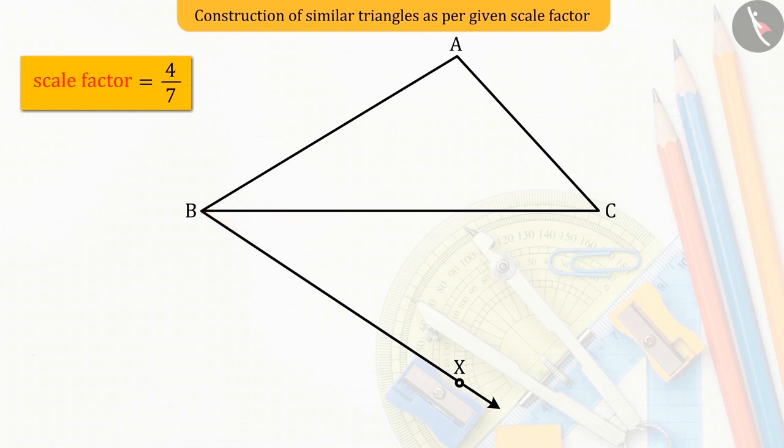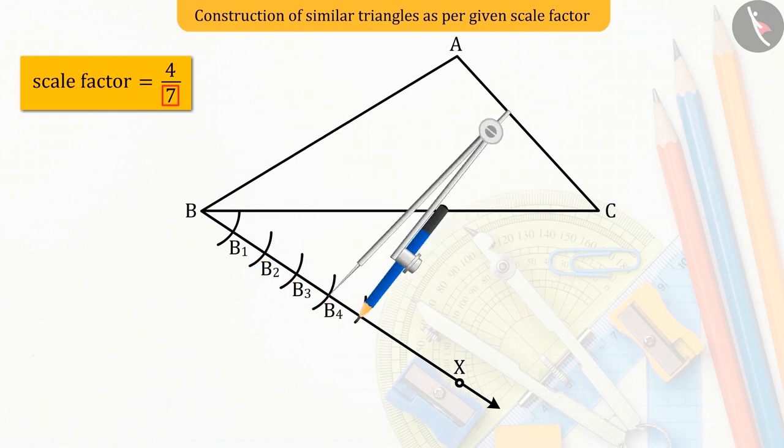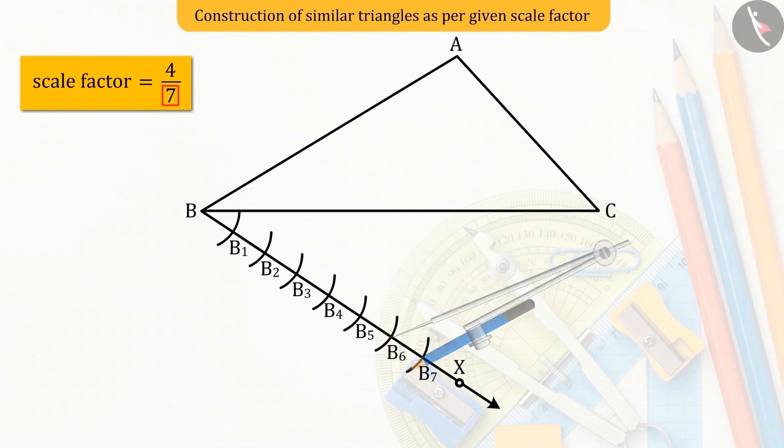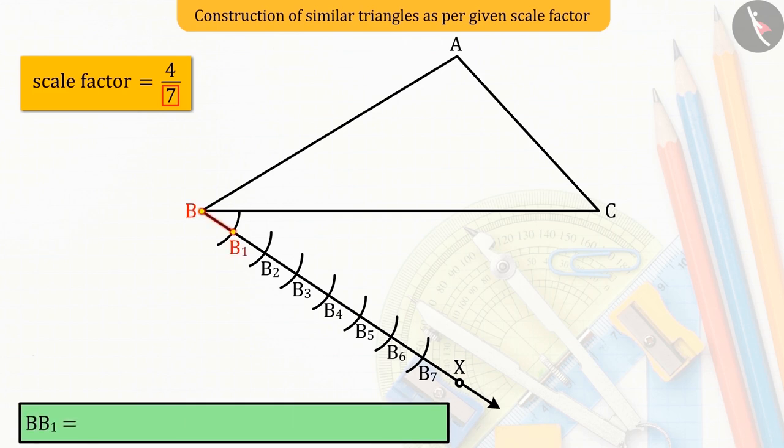Now, let's see the larger number in the scale factor, which is 7 here. So, we draw 7 arcs B1, B2, B3, B4, B5, B6 and B7 of equal radii on the ray BX, in such a way that B B1 equals B1 B2 equals B2 B3 equals B3 B4 equals B4 B5 equals B5 B6 equals B6 B7.